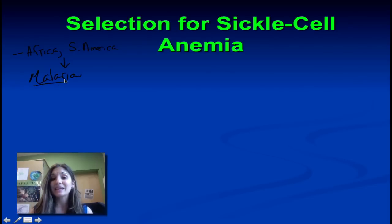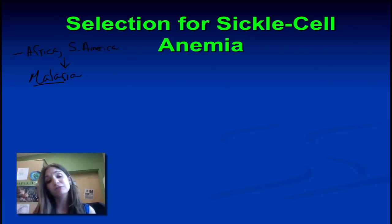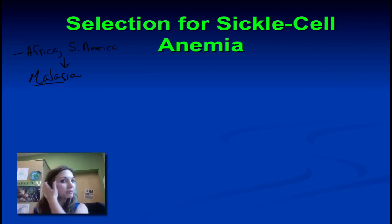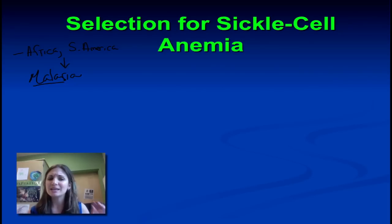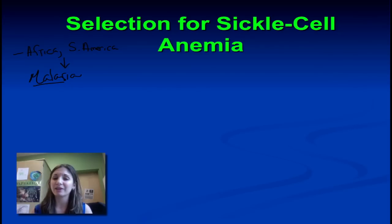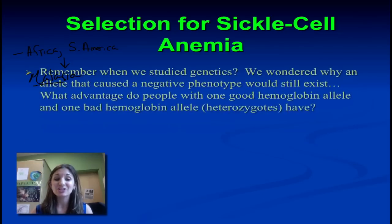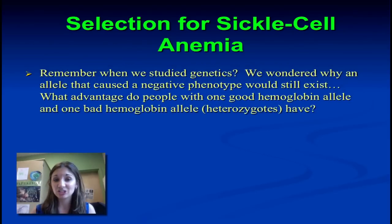Malaria is a pretty devastating parasitic disease where the plasmodium infiltrates the red blood cells and causes them to lyse. Since your red blood cells are really important for transporting oxygen around your body, having your red blood cells lyse is not a good thing. We have this high prevalence of sickle cell trait in Africa and South America that coincidentally is also a place where we have a high degree of malaria. As it turns out, there's an advantage for being a heterozygote for sickle cell anemia.